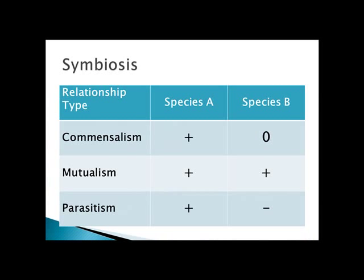To remind you about symbiosis, the three main types are commensalism, mutualism, and parasitism. There's a little graphic to help you remember which one benefits and which one doesn't, based on last lecture. It was included because it seemed to be a little bit confusing.